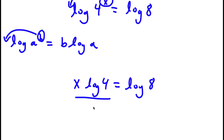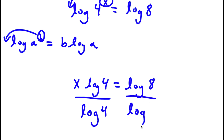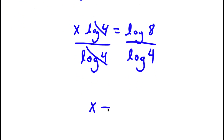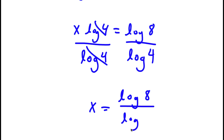Now, I can simply divide both sides by log 4. These two cancel out, and I'll be left with x is equal to log 8 over log 4.